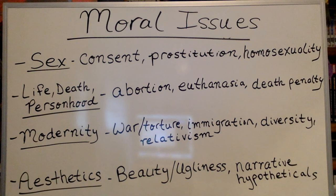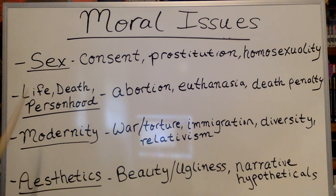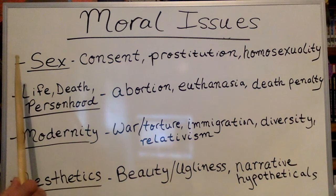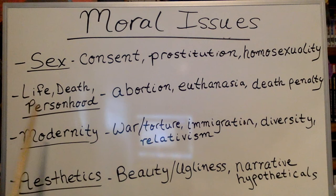Last but not least, we have the actual moral issues that we're going to be looking at over the course. If you're following along in your syllabus, you can see these are just the different sections the class breaks down to. And again, this is by no means all of the moral issues that exist. The final paper assignment is to analyze a specific moral issue according to some of the perspectives we're going to look at. You can pick one of these, but you don't have to. Our first section of the moral issues is sexual morality — we're going to look at issues of consent, prostitution, and homosexuality.